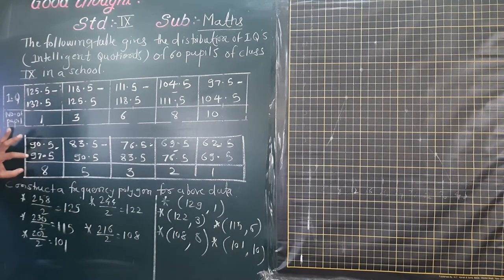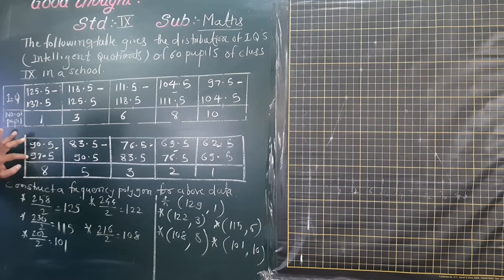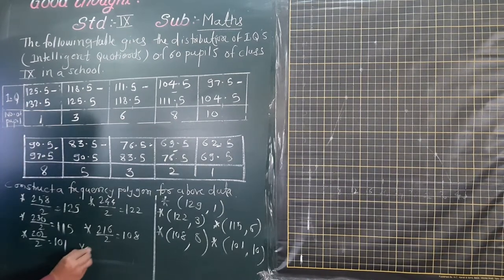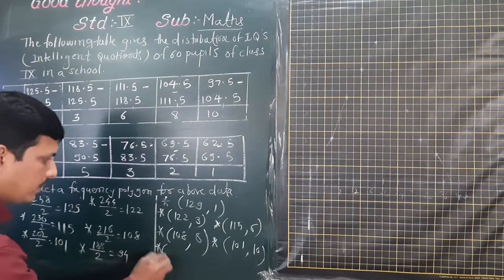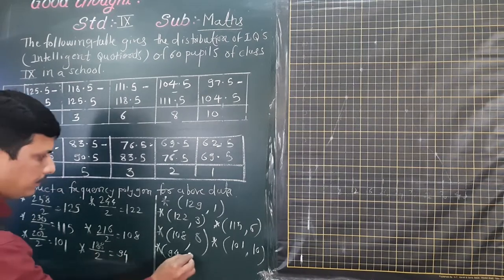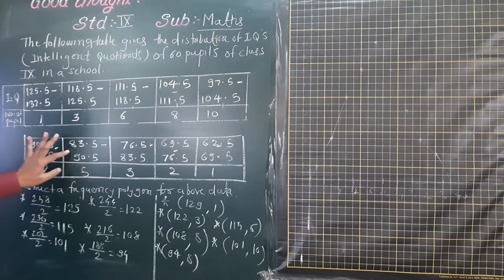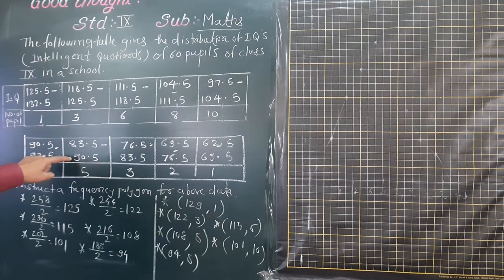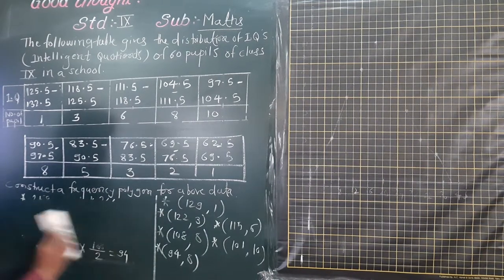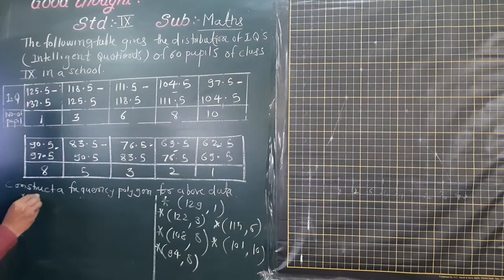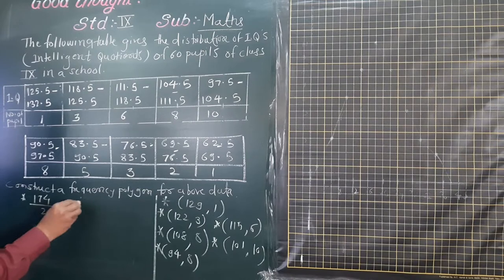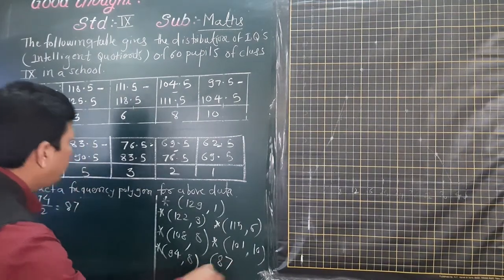Next interval is 90.5 and 97.5. The sum is 188 divided by 2, which equals 94. So the next plotting point is 94 comma 8. Then 83.5 plus 90.5: the addition is 174 divided by 2, which equals 87. So the next plotting point is 87 and 5.